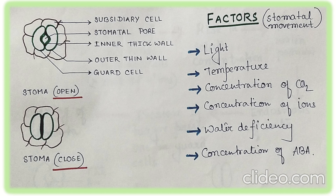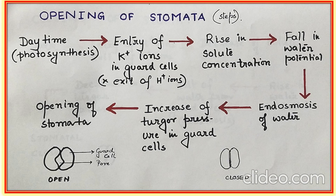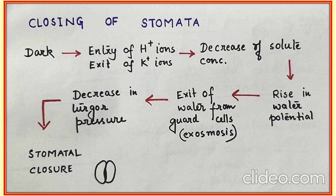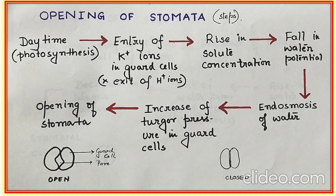When the guard cells become flaccid due to exosmosis of water, we say that the stomata have closed. Now we'll talk about the factors that control the movement of stomata. The most important factors are light, temperature, concentration of carbon dioxide, concentration of ions, water deficiency, and lastly the concentration of ABA (abscisic acid).